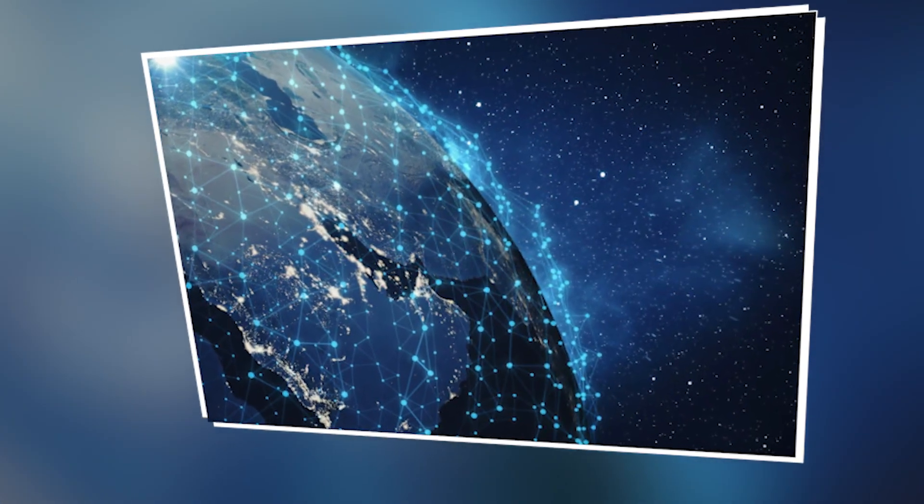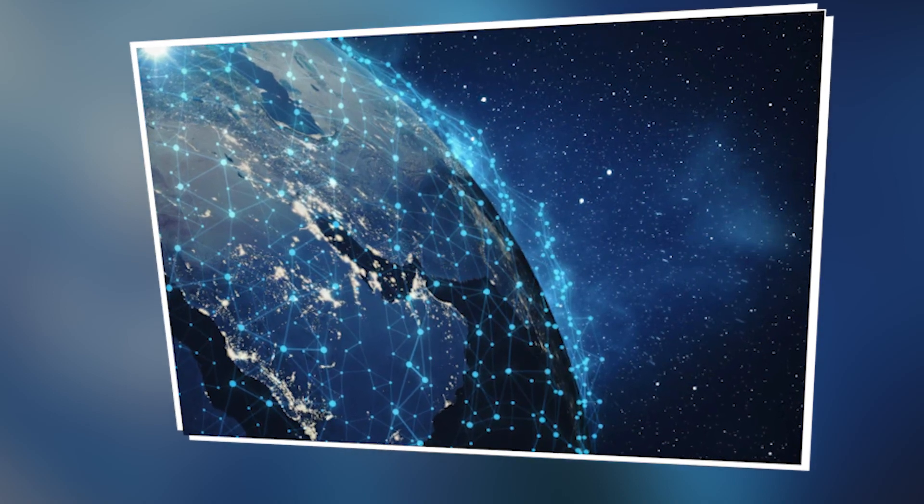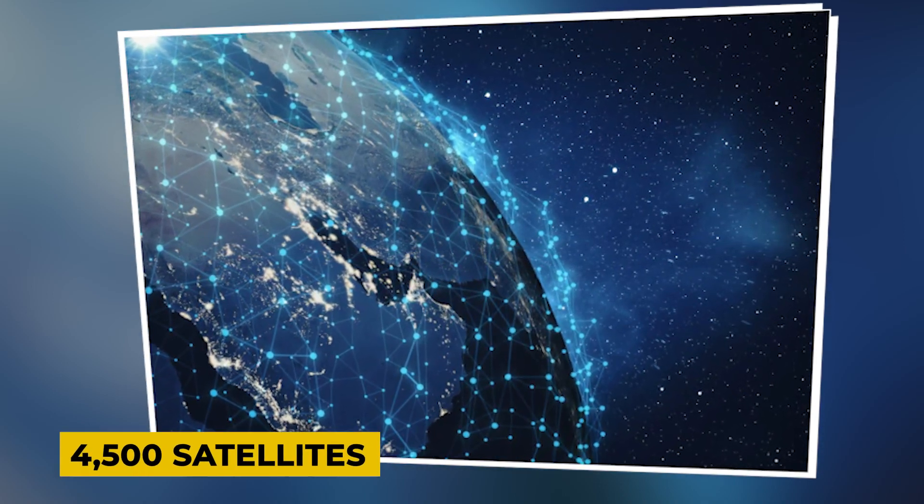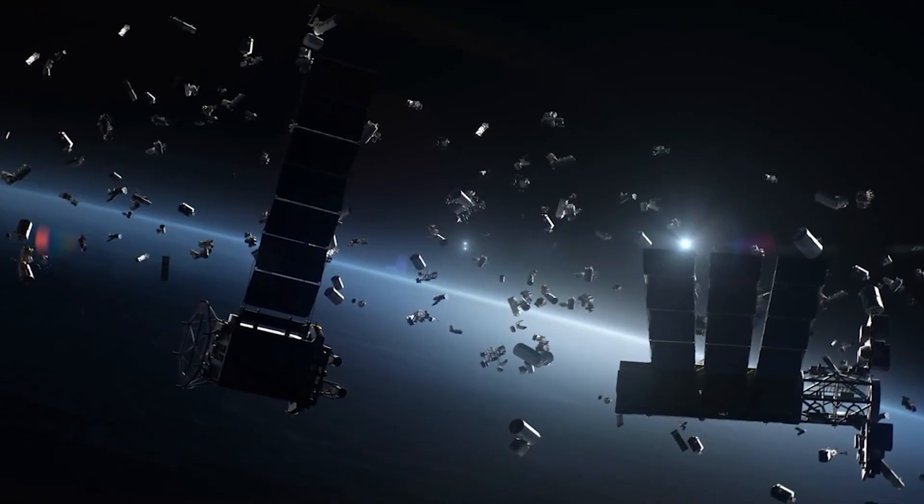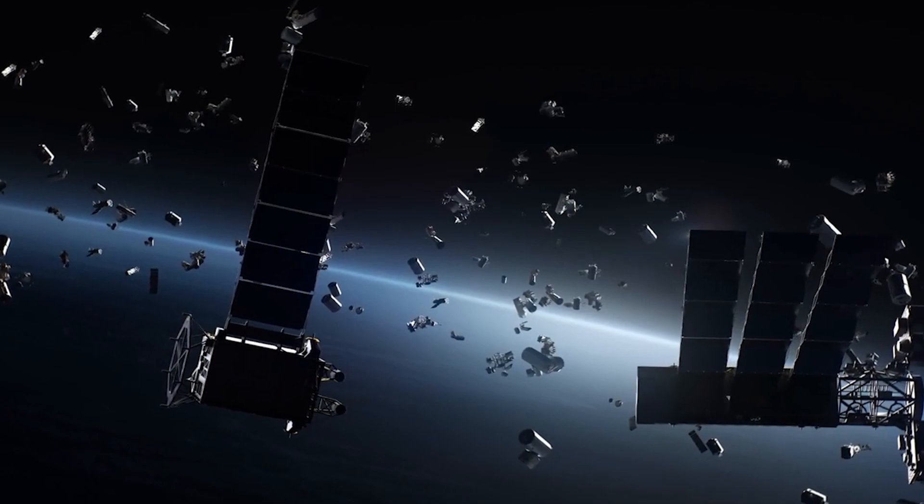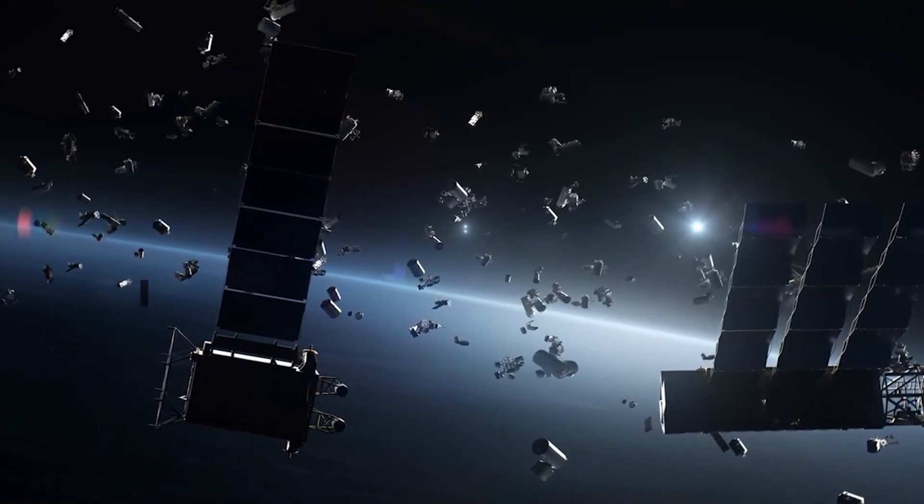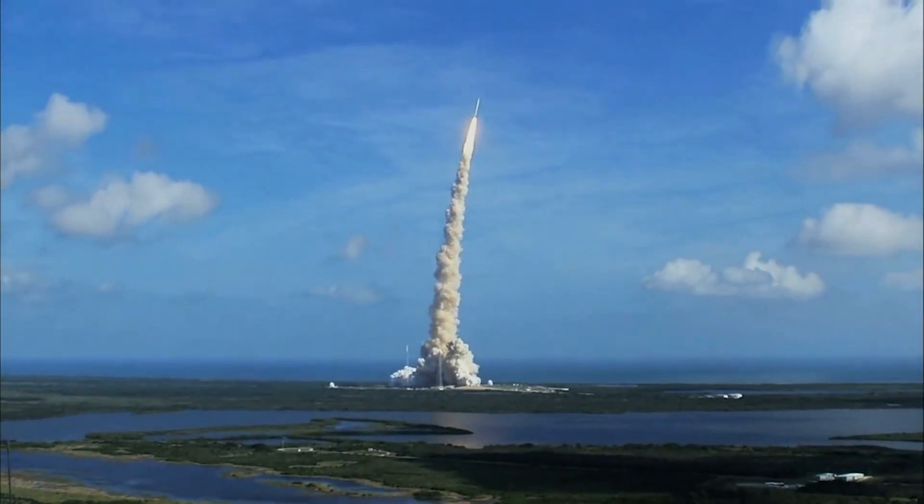As of today, the Starlink constellation comprises over 4,500 satellites orbiting in low-Earth orbit, or LEO. This staggering number accounts for more than half of all satellites operating in this orbital band, highlighting the scale of SpaceX's ambition.